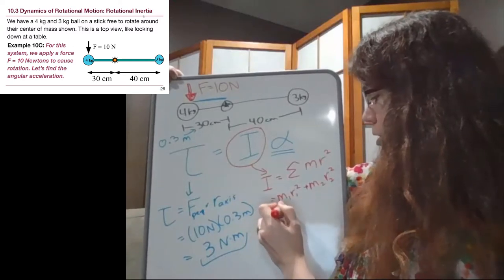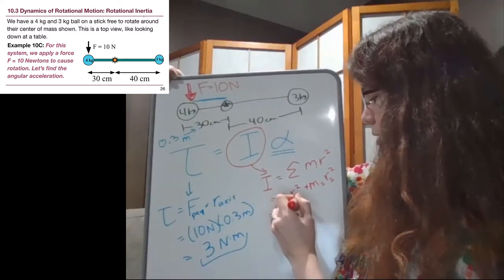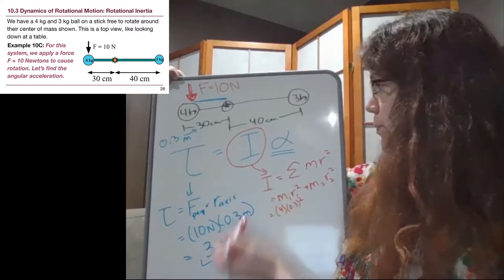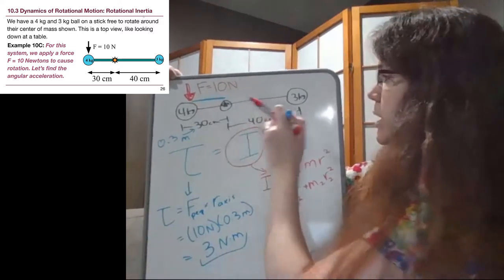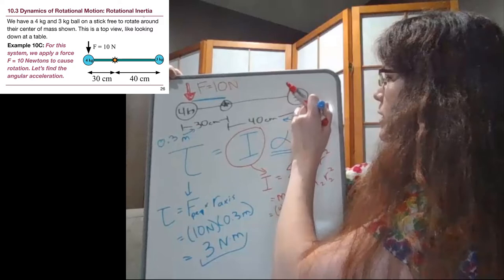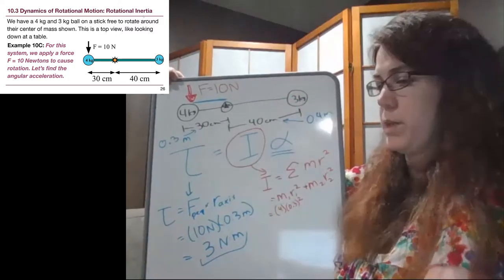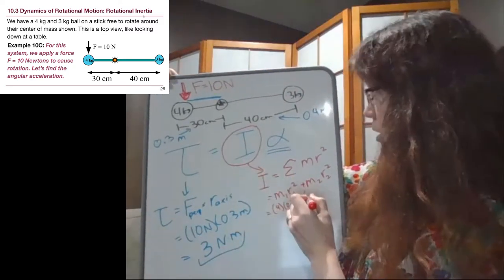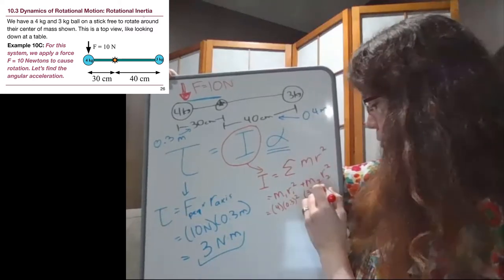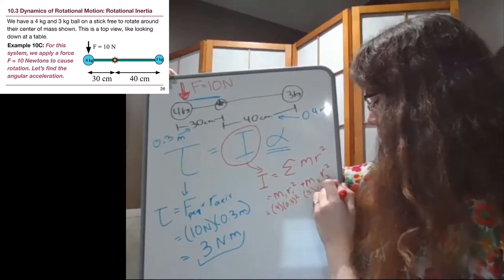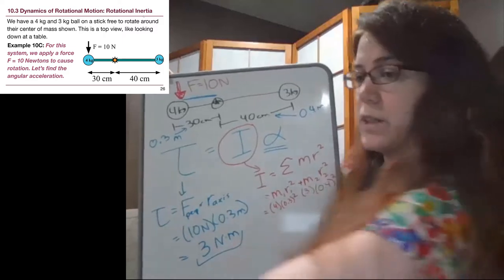So we have 4 times 0.3, and only the 0.3 is squared. As a reminder to us, this is also going to have to be converted to meters. So the 3 kilogram mass is 0.4, 0.4 away, and only that 0.4 is squared.